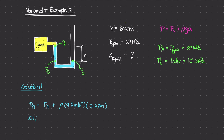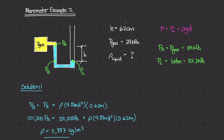So 101,300 pascals equals P sub A, which is the gas pressure of 29,000 pascals, plus rho times the gravitational constant times the height difference of 0.62 meters. Solving for rho gives approximately 11,887 kilograms per meter cubed — that is the density of the liquid inside the manometer.